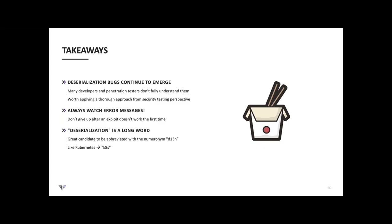Just a couple of takeaways: deserialization bugs continue to emerge and many developers and pen testers still don't fully understand them. This is really worth understanding at a fundamental level and applying a thorough approach when testing applications that deserialize untrusted user data. Always watch error messages — I can recall many times when that's finally allowed me to exploit an application I was really struggling with. And as a fun aside, 'deserialization' is a great candidate to abbreviate as D13N, just like we abbreviate Kubernetes as K8s.